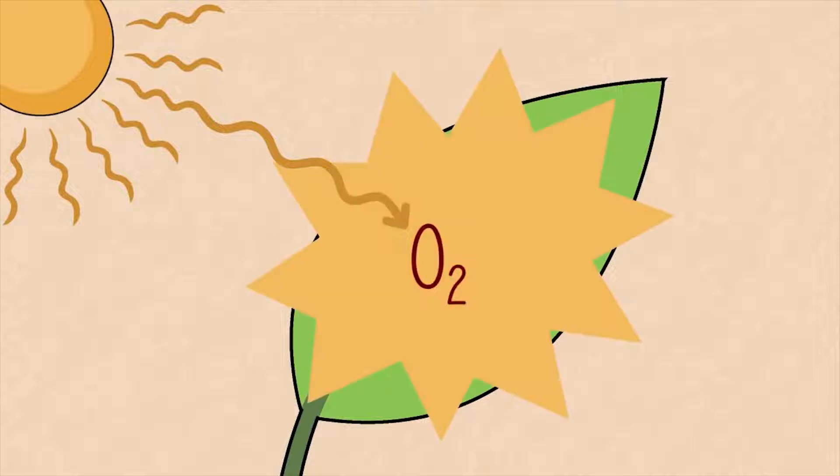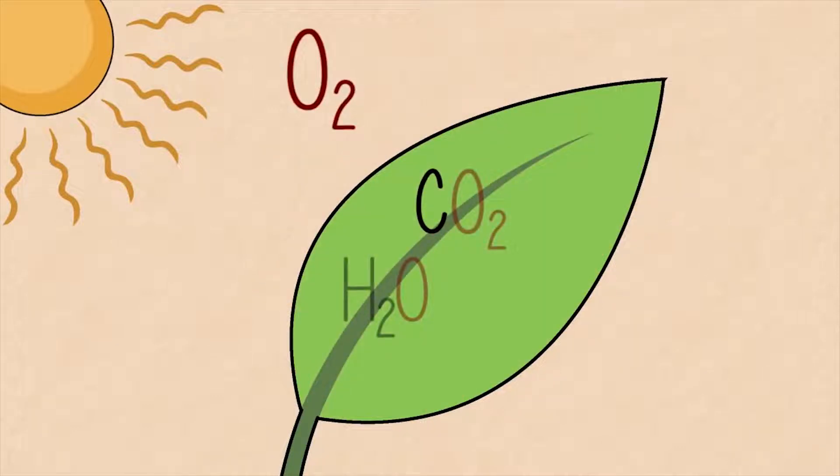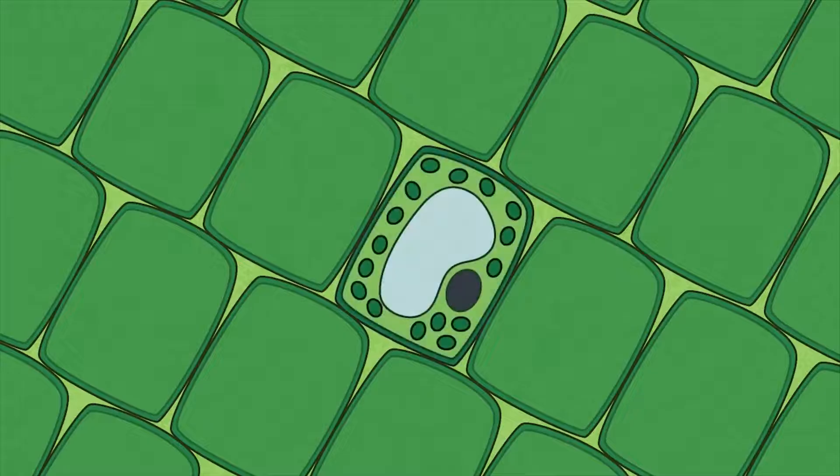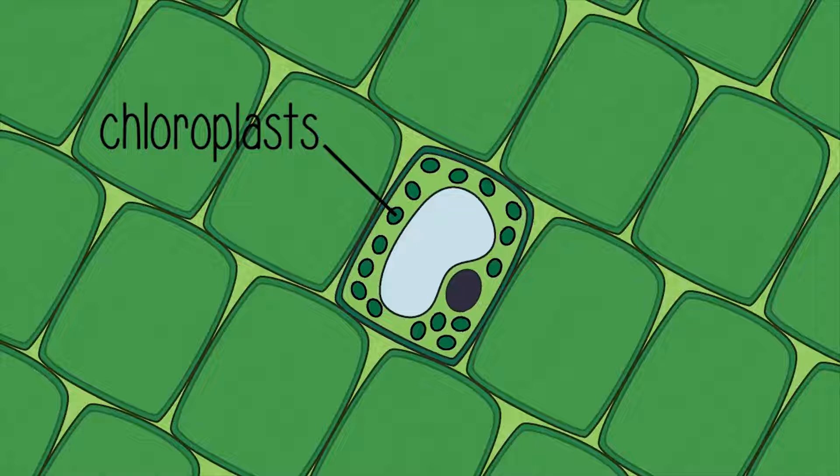Plants use the sunlight to pull oxygen away from water and carbon dioxide, allowing the plant to capture the carbon. This happens in the green chloroplasts found in the leaves of plants.